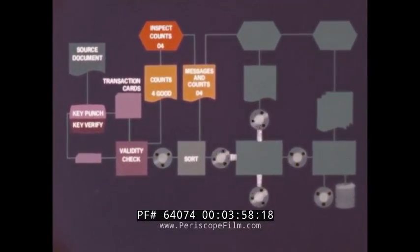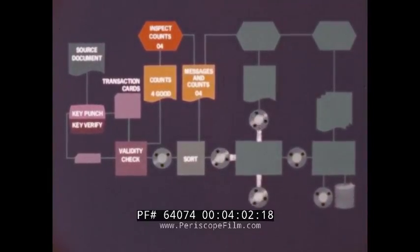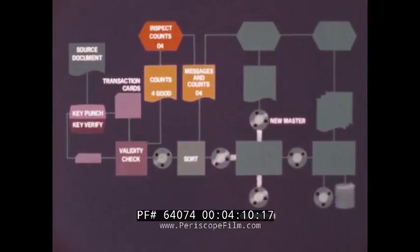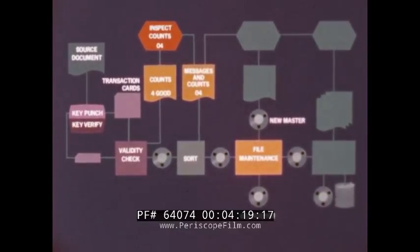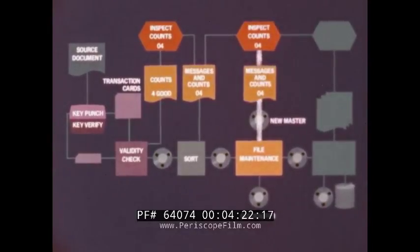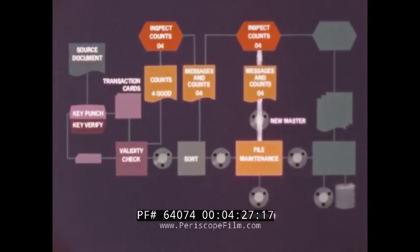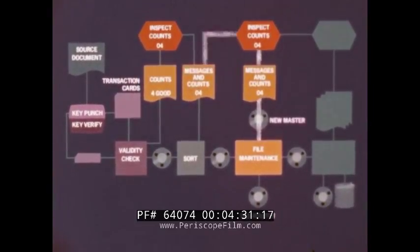After they're sorted, the good transactions must be read again and processed against the old master file to create a new master file. This step is called file maintenance. Again, messages and counts which are printed must be inspected — this time they must be checked against the sort run counts.